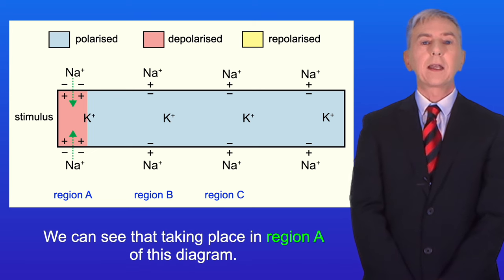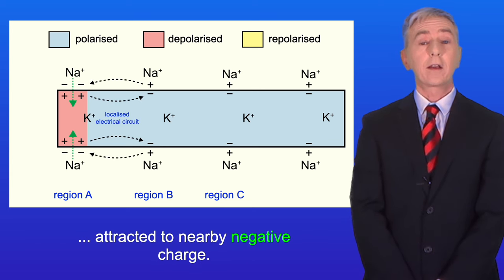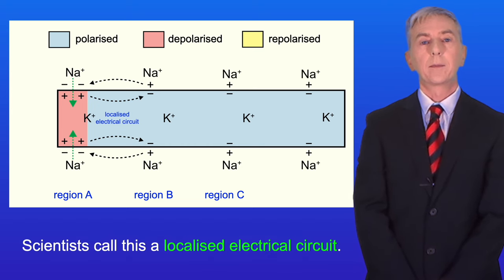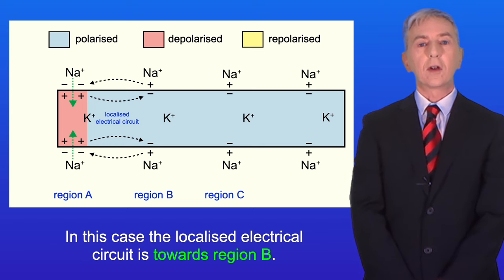We can see that taking place in region A of this diagram. The sodium ions then move along the interior of the axon attracted to nearby negative charge and scientists call this a localized electrical circuit. In this case the localized electrical circuit is towards region B.